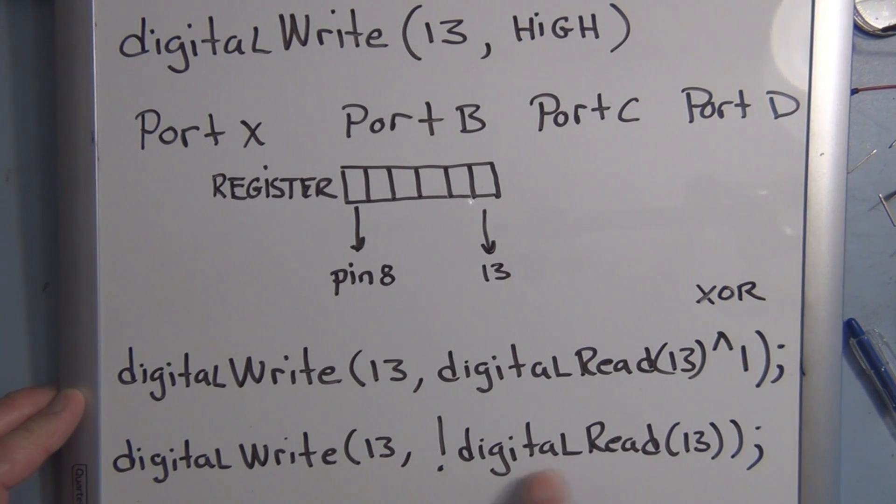In this case, we're using the exclamation mark, which is a Boolean operation, and what this does is it's a NOT. So whatever digitalRead returns after looking at 13, if it's a 0, NOT 0 is a 1. And if it's a 1, NOT 1 is a 0. So either of these is an option to use for using just a one-line statement to toggle an output.